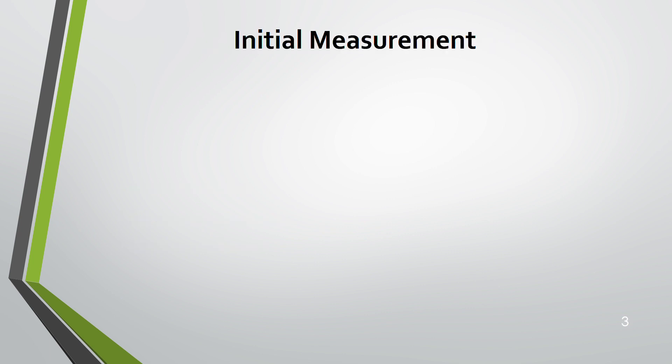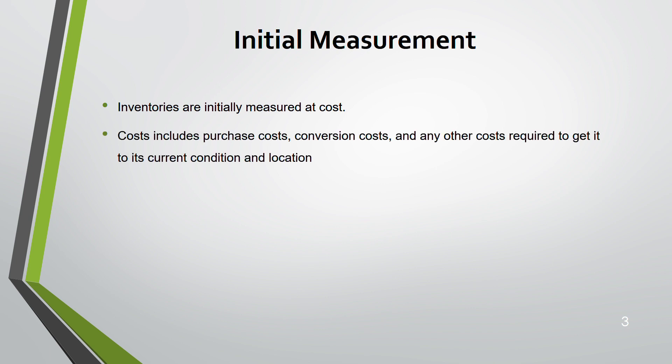Let's start with initial measurement. Initially you measure inventory at cost. What is this cost? Cost includes purchase cost, conversion cost — that means converting raw materials to finished goods — and any other cost required to get the inventory into its current condition and location. Remember this, because sometimes in the exam they might give you many costs and you need to know which ones to include in inventory.